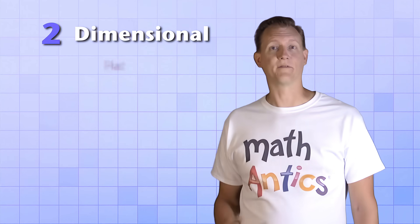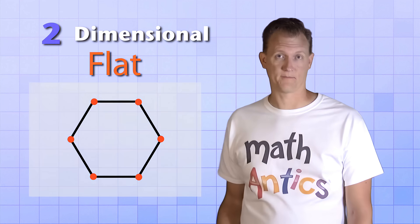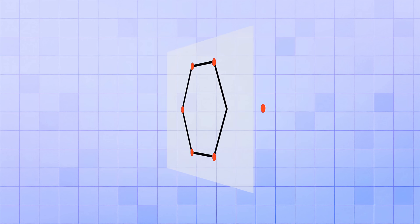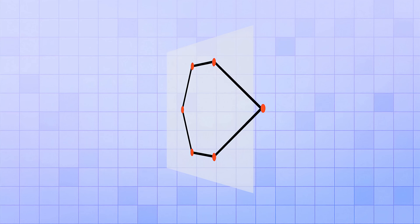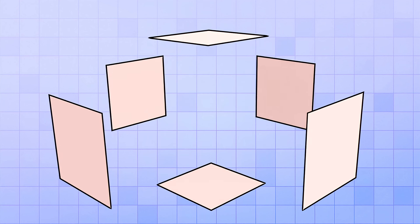The last thing we need to know about polygons is that they're two-dimensional or flat shapes. That means that all the vertices must lie on the same plane. If any one of the vertices were to move forwards or backwards so that it wasn't on the same plane as all the other vertices, then it wouldn't be a flat shape anymore. Flat shapes are also called planar shapes because all of their points are on the same plane. And even though polygons themselves can't be 3D shapes, you can use polygons to make 3D shapes, like a box. The box is not a polygon, but each of its flat sides is a polygon.